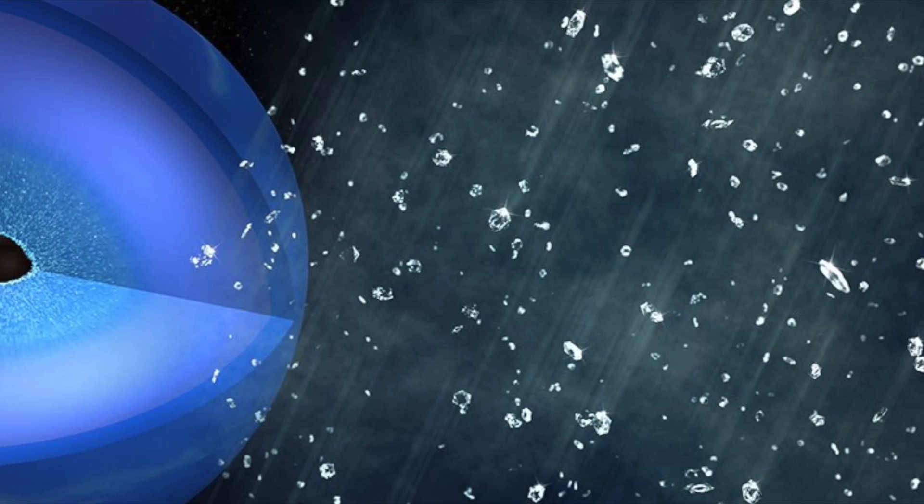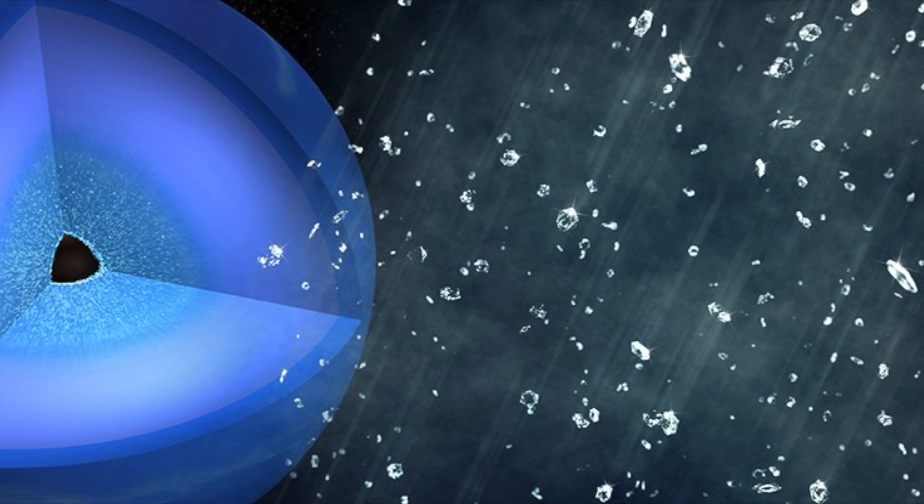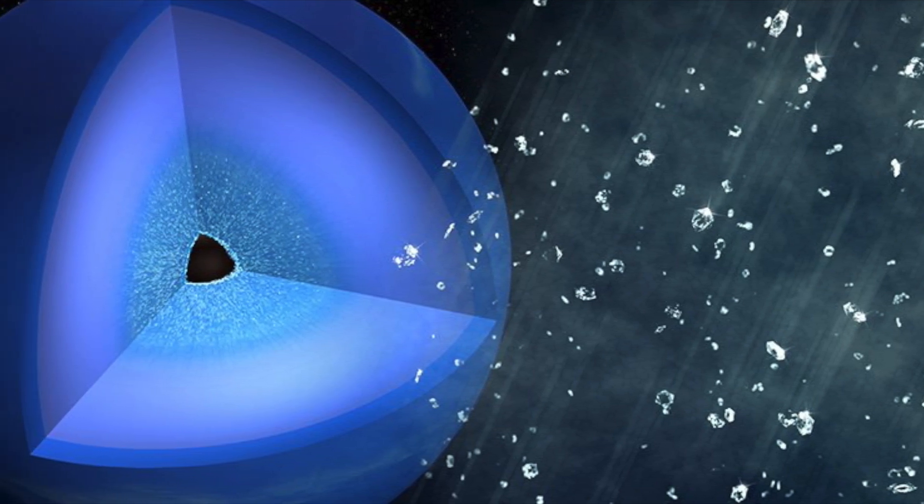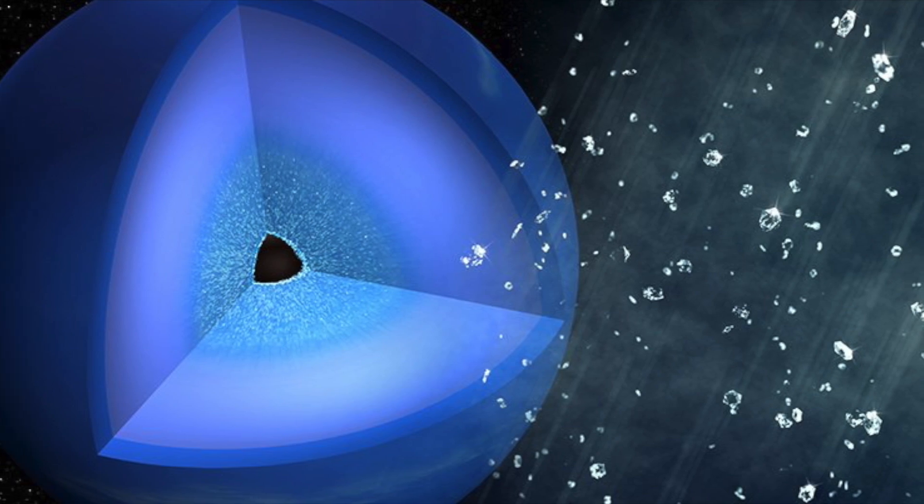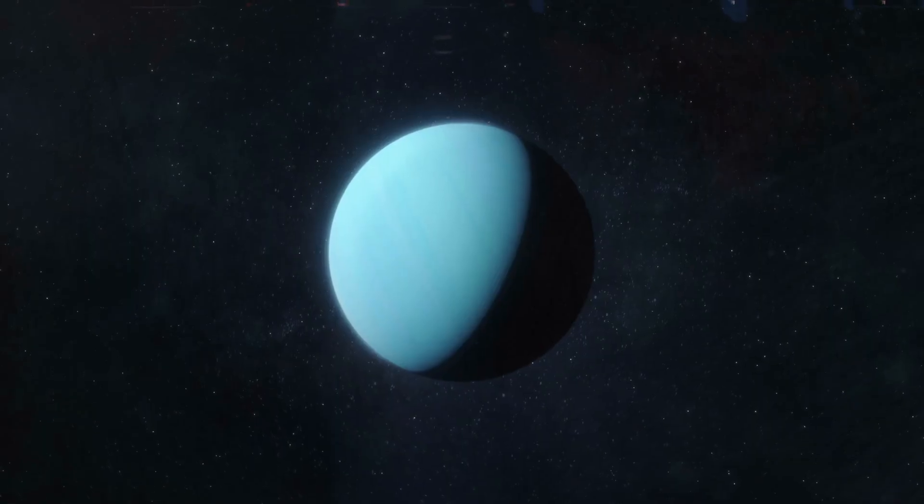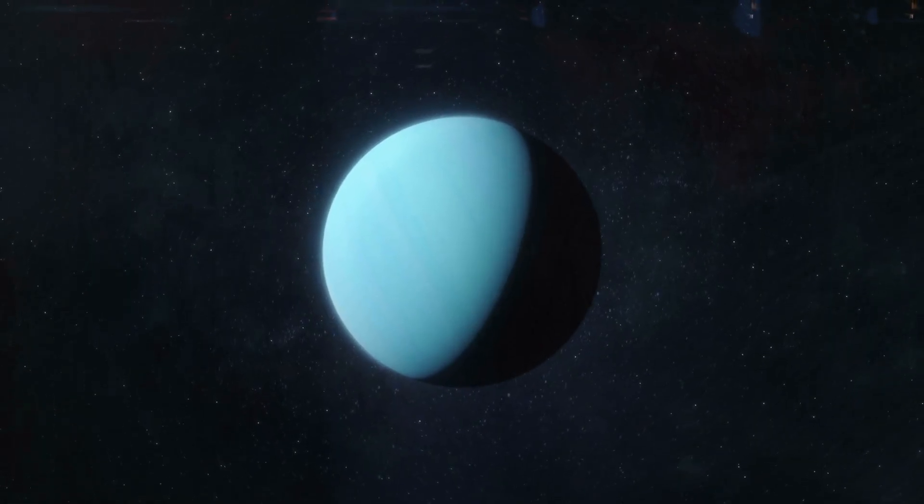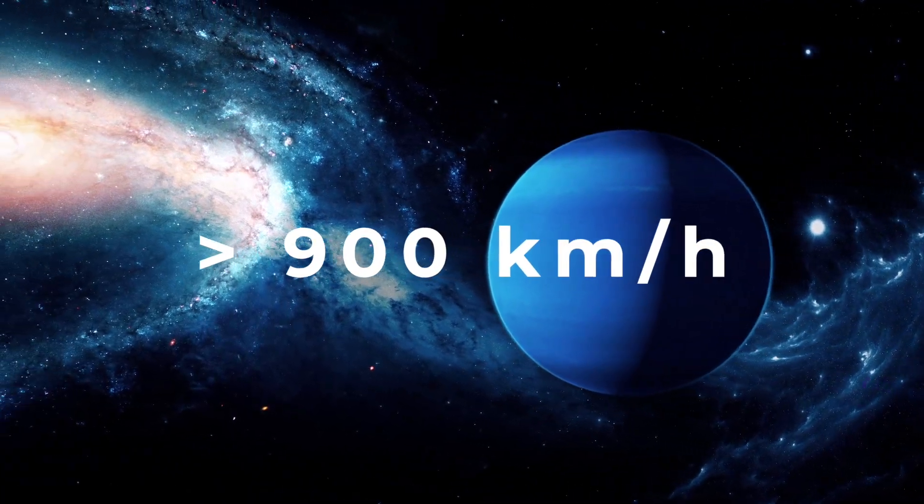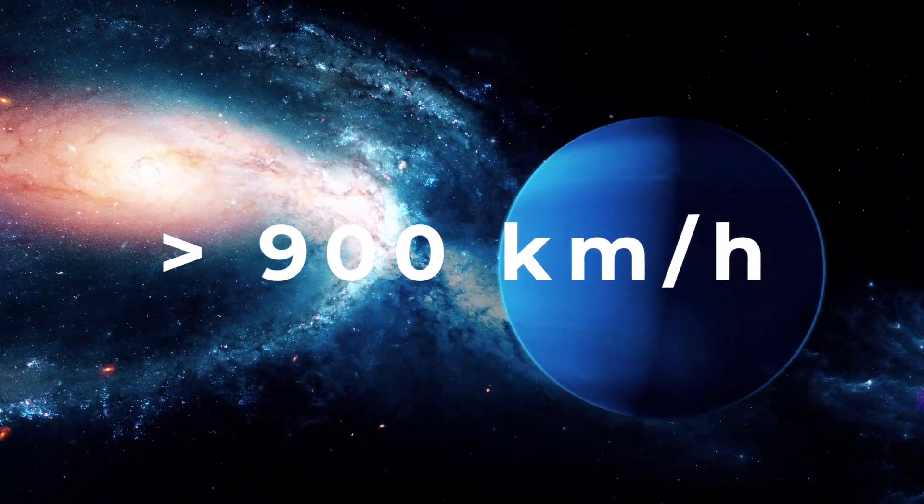Some astronomers suspect that the winds of Neptune originate from inside the planet and are the result of the internal heat source combined with the natural rotation of the celestial body. This would also explain why the winds of Uranus are much weaker than the storms on Neptune, at a speed of about 900 km per hour, even though both planets have a similar rate of rotation.